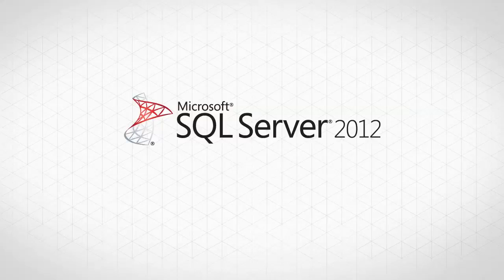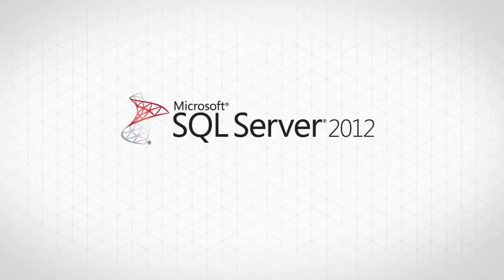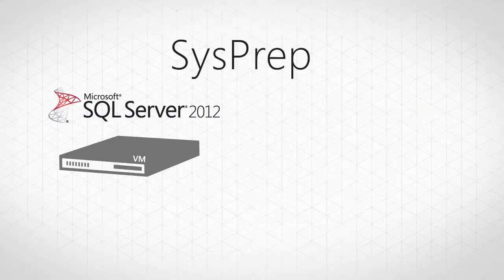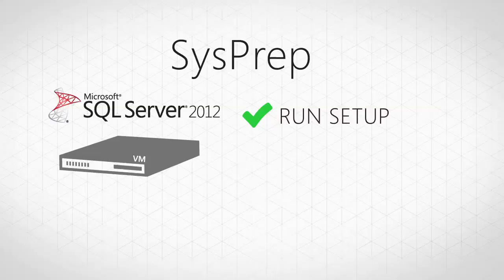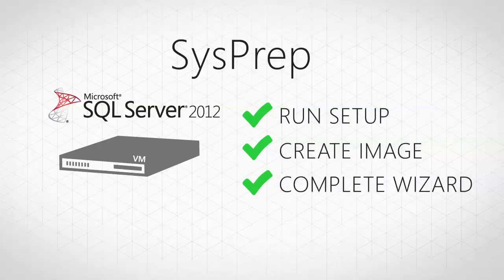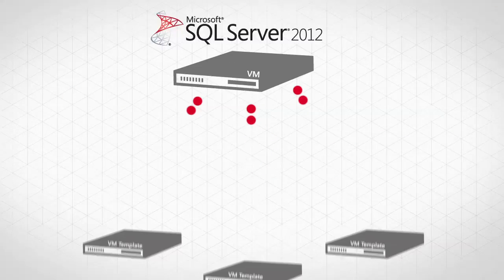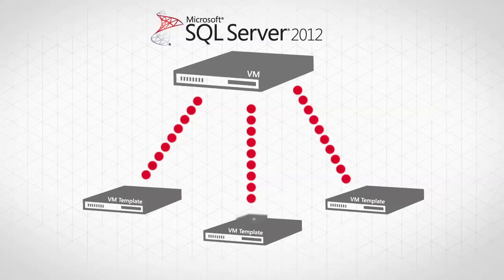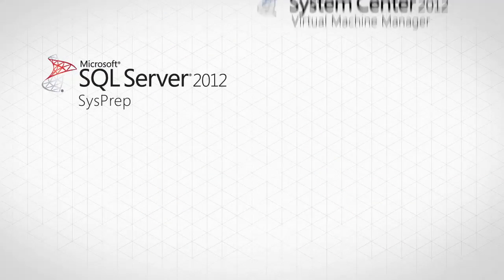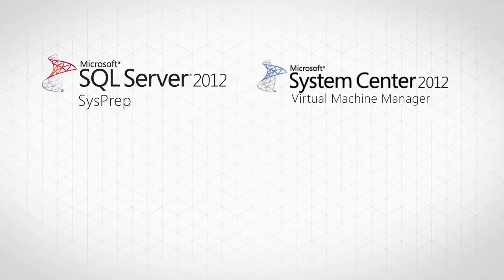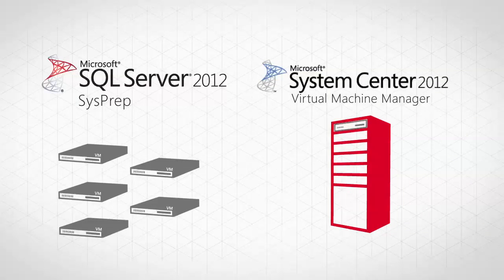SQL Server 2012 makes the process even more straightforward with its SysPrep functionality. To create an image with SQL Server 2012, you just need to run setup and choose the option to create an image. This will then run through a wizard to create a standardized SQL Server image, which can then be used in your virtual machine templates. The combination of the SysPrep functionality in SQL Server 2012 and System Center Virtual Machine Manager can enable rapid virtual machine provisioning for database workloads and help drive towards standardization of virtual machines.